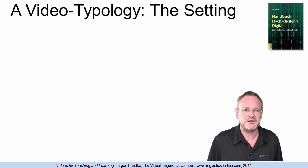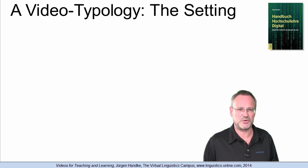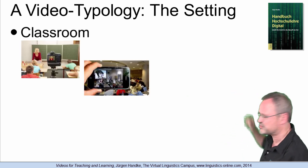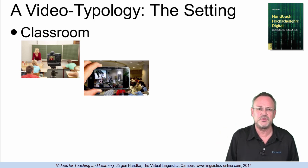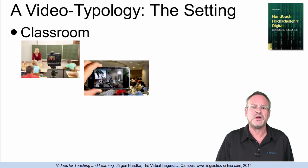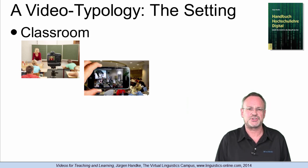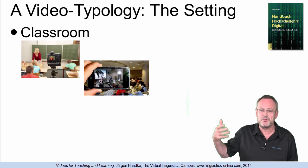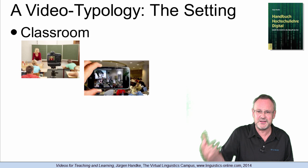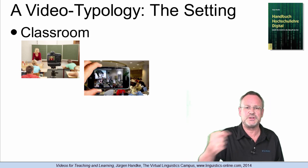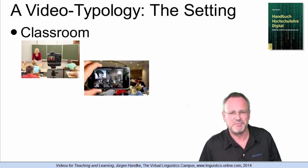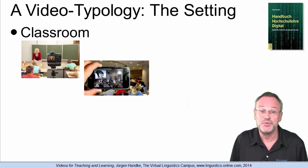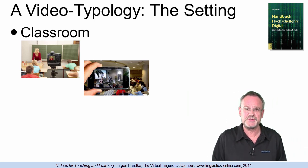And here we can define three scenarios. The first is the classroom setting — a setting where the video is produced within a classroom with a real audience in real time. As shown here, the equipment may range from standard video recording equipment to an in-class recording using a cell phone. However, studio equipment is not normally used with this setting.